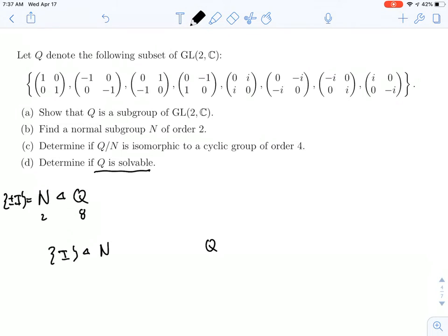So we saw before that R squared was equal to negative I. And then, of course, R to the fourth was equal to I. And sitting in between, you had R cubed equal to minus R. And, of course, in the beginning you have R. So this ends up giving us a subgroup of order 4 that contains I and negative I.